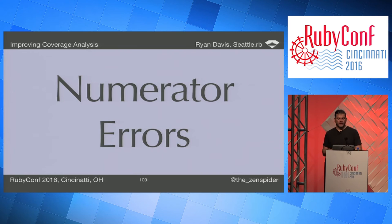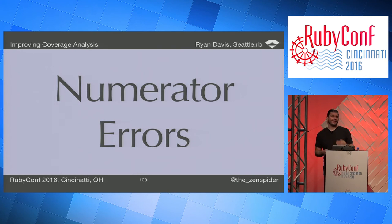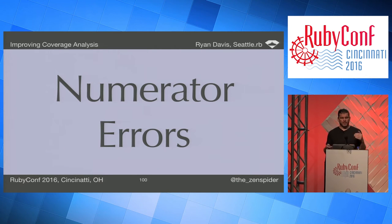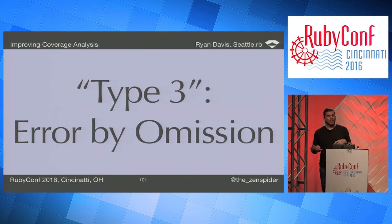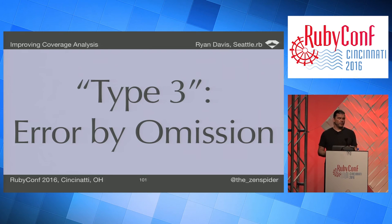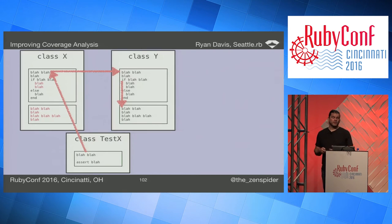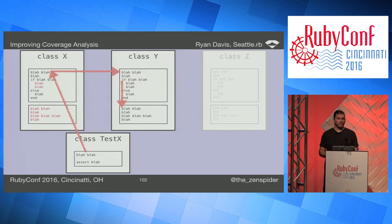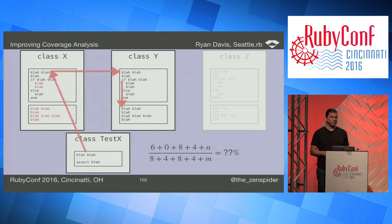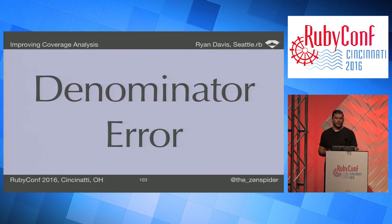Both Type 1 and Type 2 errors are errors in the numerator, assuming you've sampled everything you need — and statistics seems to assume you always will. So there isn't agreed-upon nomenclature for when you haven't. I'm calling this a Type 3 error — an error of omission. Similar scenario, but you haven't even loaded a class Z, resulting in an erroneously high percentage because you haven't factored in zero-over-whatever — an error in the denominator.